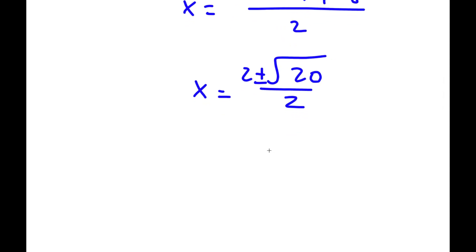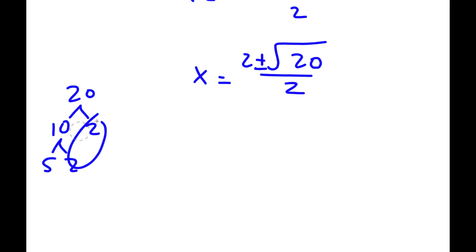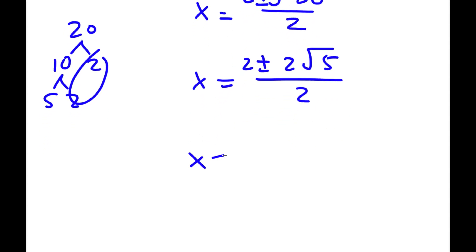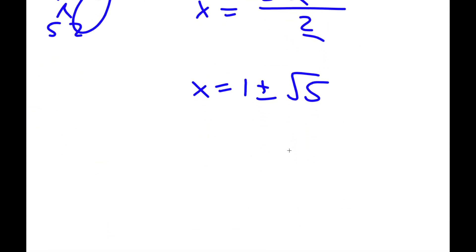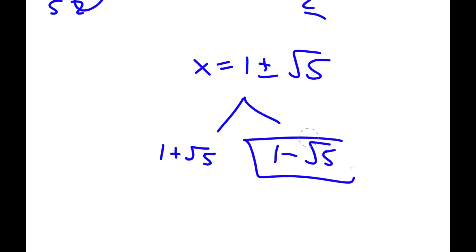So I have 2 plus or minus the square root of 20, over 2. Now the square root of 20 equals the square root of 4 times 5, which equals 2 root 5. So I have 2 plus or minus 2 root 5, all over 2. Dividing both terms by 2 gives 1 plus or minus the square root of 5. So my two answers are 1 plus the square root of 5, and 1 minus the square root of 5.